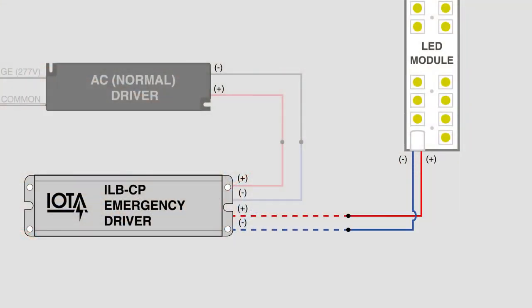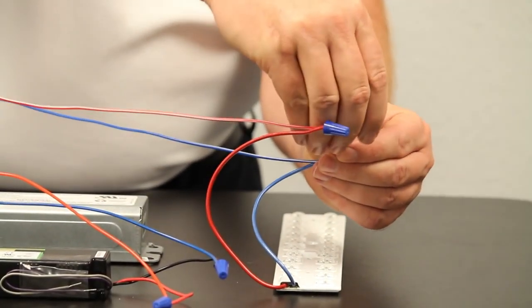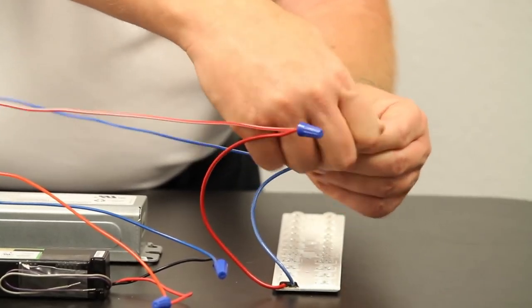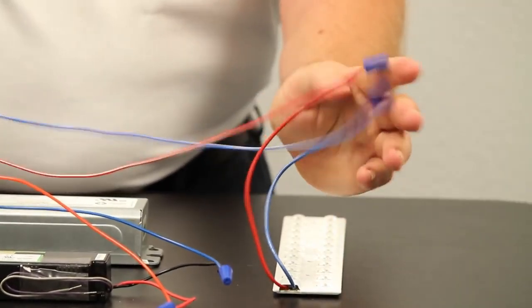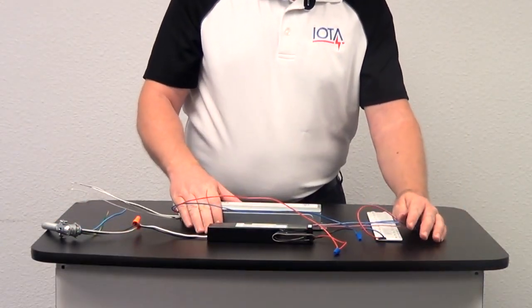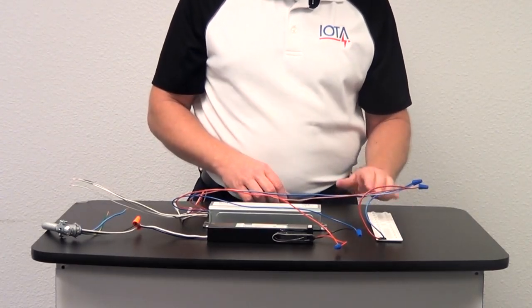Again, just like the driver, the LED module may have different color wires for its connections. Please refer to the label on the LED module or the installation manual as needed. That completes the connection between the ILBCP and the LED module.